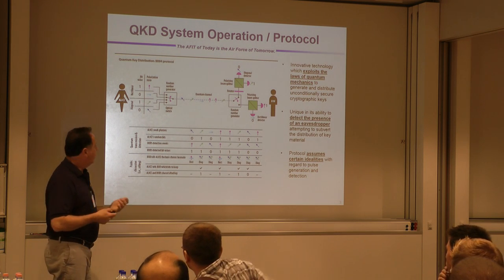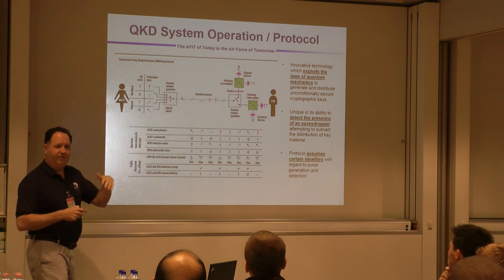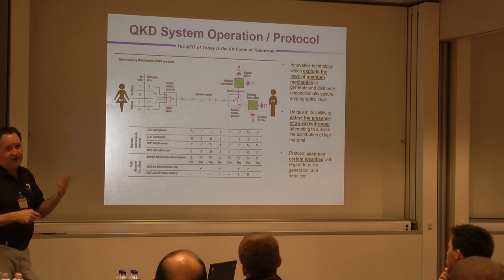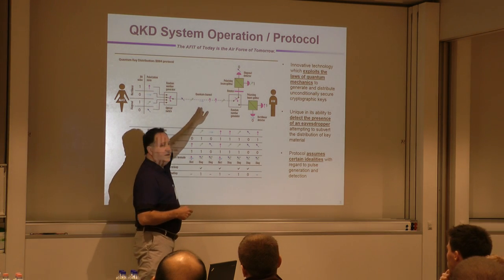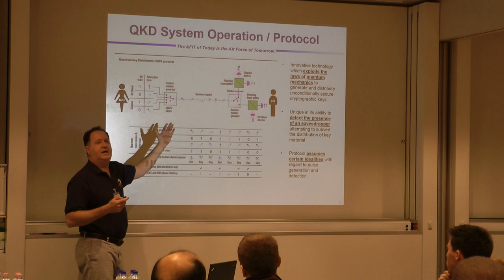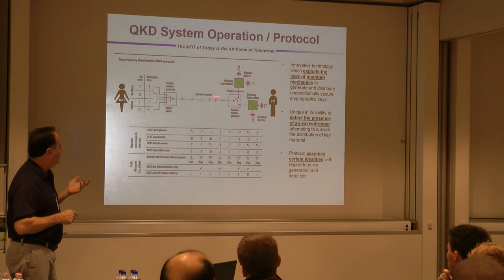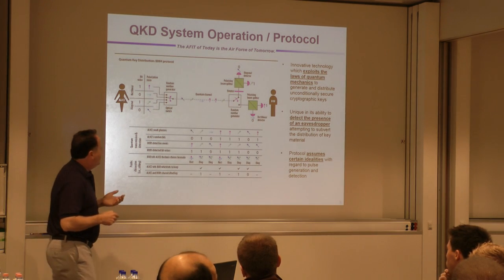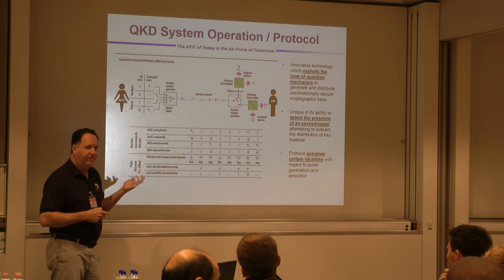If things work correctly, and there are certain error thresholds about errors introduced through various non-idealities, you can essentially assure that there has been no Eve in the system that actually detected and knows that key. What's unique about it is really the fact that you can actually detect an eavesdropper. That's why it's of high interest.